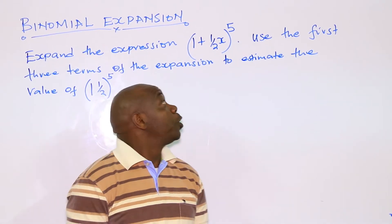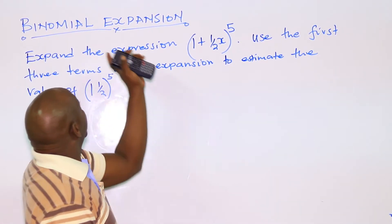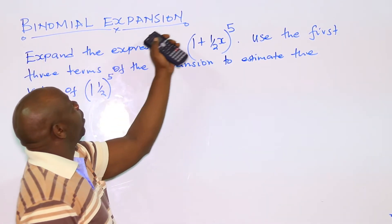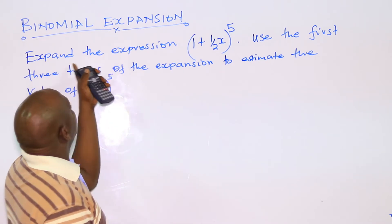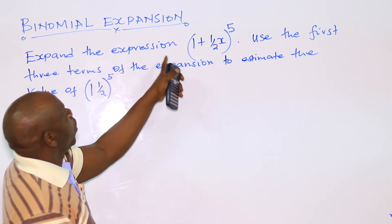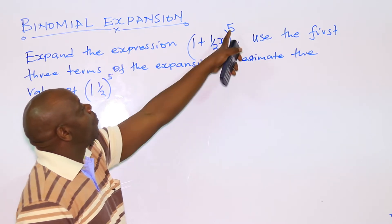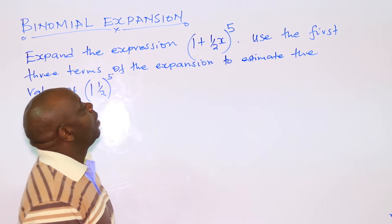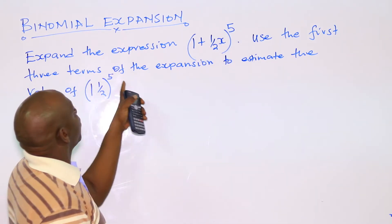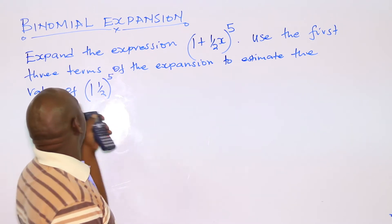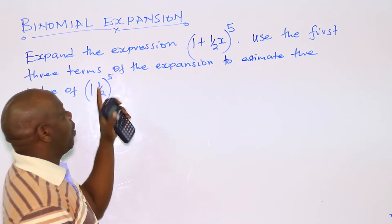Hi. Today, we want to go through a question on binomial expansion. You are given: expand the expression (1 + ½x)⁵, then use the first three terms of the expansion to estimate the value of 1.5⁵.